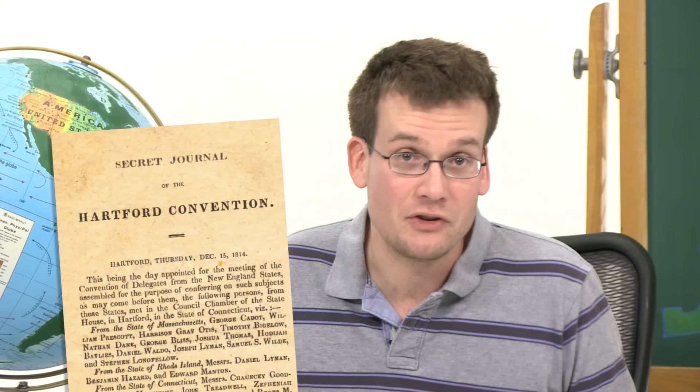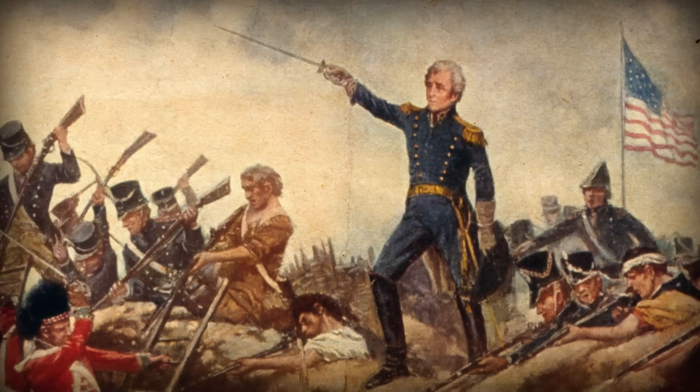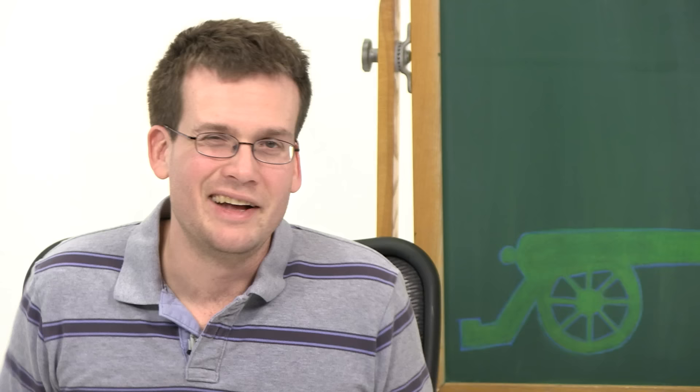which tried in 1815 with the Hartford Convention to change the Constitution. In retrospect, the Hartford Convention proposals actually looked pretty reasonable. They wanted to eliminate the clause wherein black people were counted as three-fifths of a human, and require a two-thirds congressional majority to declare war. But because they had their convention right before Jackson's victory at New Orleans, they only came off looking unpatriotic and out of touch, as the elite so often do.